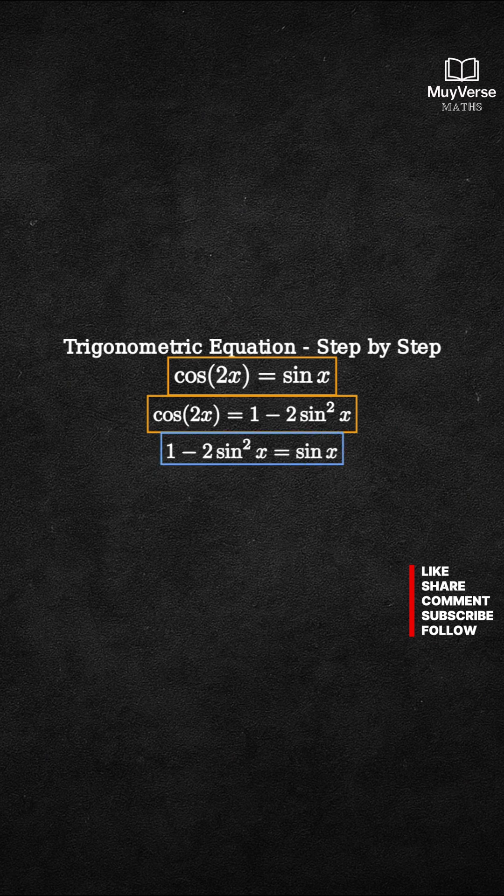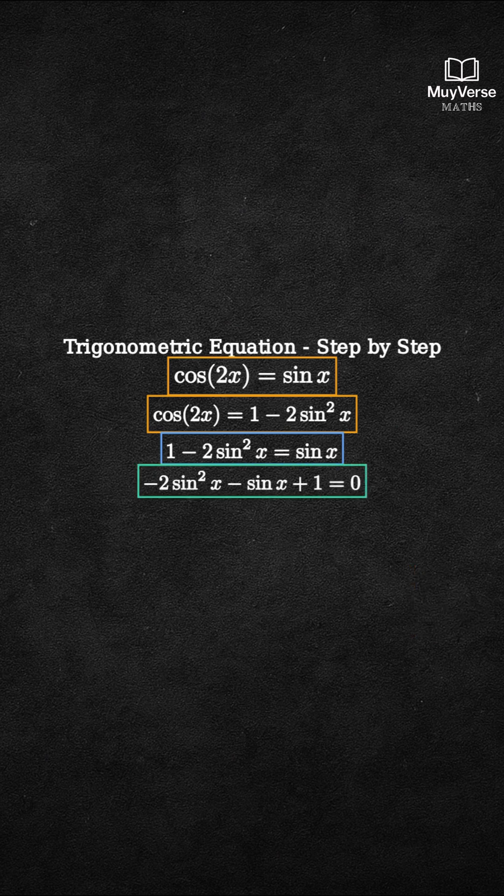1 minus 2 sine squared x equals sine x. Step 2: Move all terms to one side to make a quadratic in sine x. Negative 2 sine squared x minus sine x plus 1 equals 0.